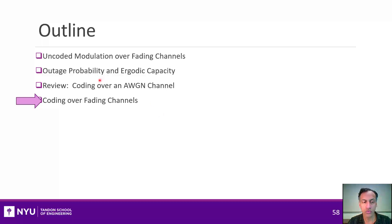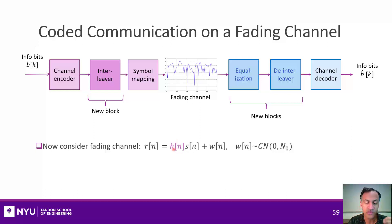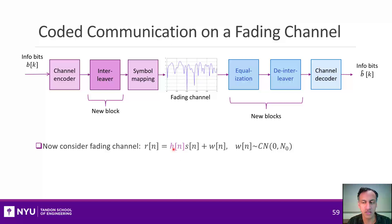Now that we have seen how to do channel coding over an AWGN channel, it will not be that many modifications to get it to work over a fading channel. We have basically the same setup as before, but the received symbols are being multiplied by the fading gain. We're assuming that the fading is known and that it is IID, or independent, on every symbol.